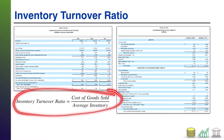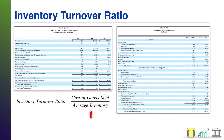Notice the equation down here at the bottom. Inventory turnover ratio equals the cost of goods sold — an income statement number — divided by average inventory, which is your beginning plus ending balance sheet inventory divided by two.